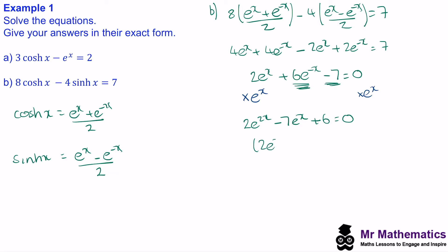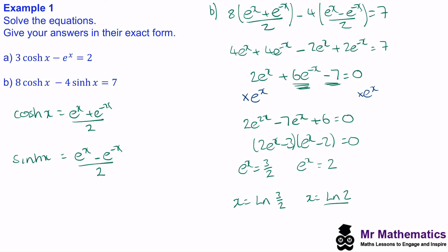Factorising gives 2e to the x minus 3, and e to the x minus 2. So our solutions are when e to the x equals 3 over 2, and e to the x equals 2. Taking the natural log of both sides, x equals the natural log of 3 over 2, and x equals the natural log of 2. That's a quick demonstration of how to solve hyperbolic equations using the exponential form.